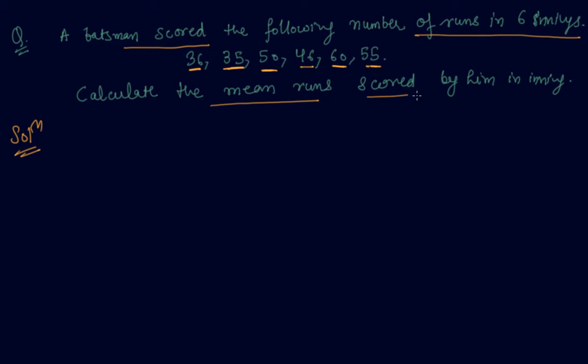So we have to find out first the total runs. Total runs will be 36 plus 35 plus 50 plus 46 plus 63 plus 55.